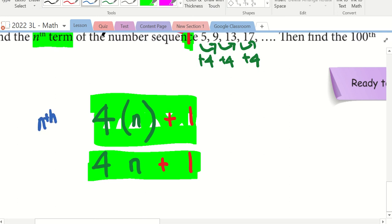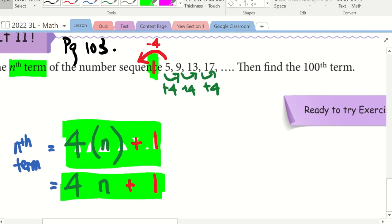Why is it useful to find the Nth term? I don't need to draw arrow 100 times. Because I want to find my 100 term now. 4 bracket 100 plus 1. Very good. 401.